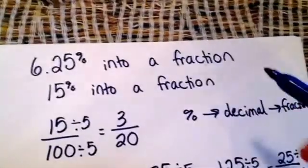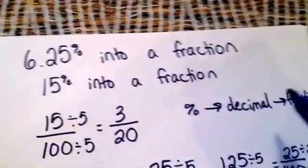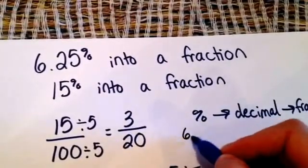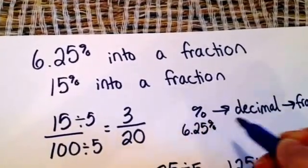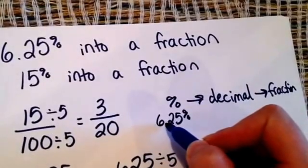Now, remember before I said we could change it from a percent to a decimal to a fraction? So we start with 6.25%. To change it to a decimal, I'm going to move the decimal two places to the left.